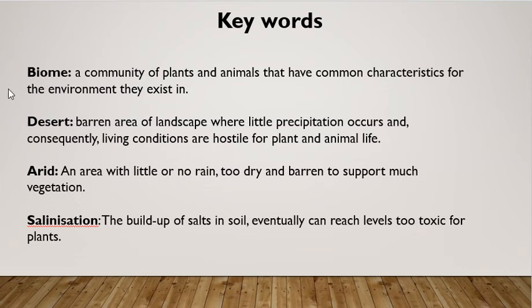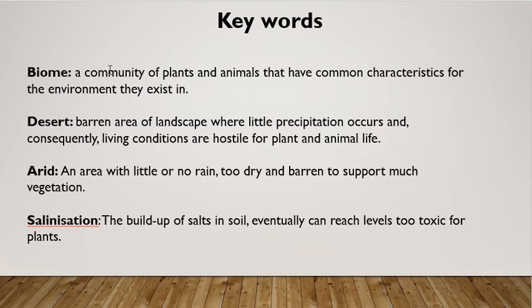A biome is a community of plants and animals that have common characteristics for the environment they live in. For example, in the desert biome there is a community of plants and animals that have adapted to live in the desert — a very hot and hostile area. Plants might have really long roots to reach the water table deep underground, and animals would be able to carry and store moisture. So a biome is a community of plants and animals with common characteristics for the environment they exist in.